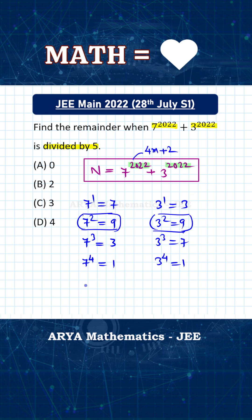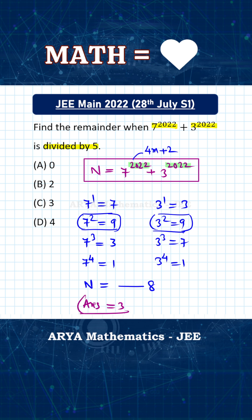So for the number n, the digit at unit place will be 9 plus 9, which gives 8 — since 7 raised to 2022 contributes 9 and 3 raised to 2022 contributes 9. With 8 at the unit place, dividing by 5 gives a remainder of 3. So the correct answer for this problem is option C.